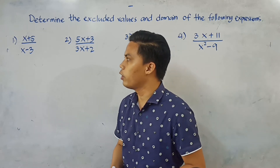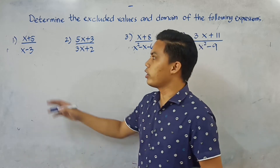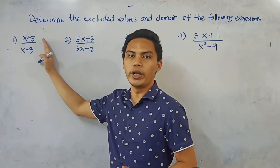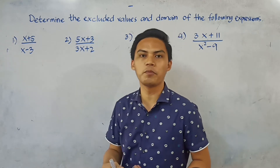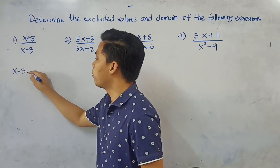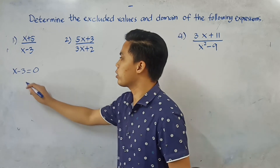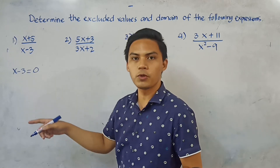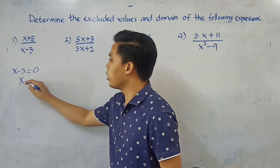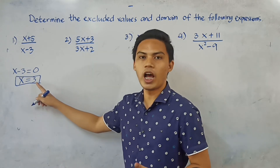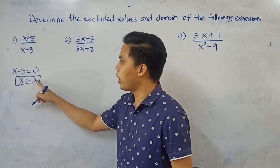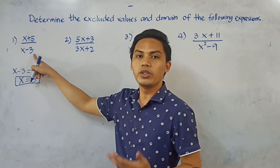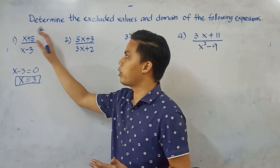Example 1: x plus 5 all over x minus 3. To find the excluded values, we equate the denominator to 0: x minus 3 = 0, so x = 3. This means x = 3 is not allowed — if we substitute 3 into the denominator, we get 3 minus 3 = 0, making the expression undefined. Therefore, the domain is all real numbers except positive 3.